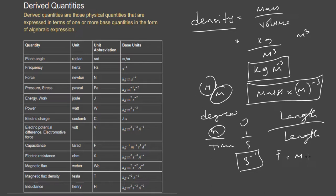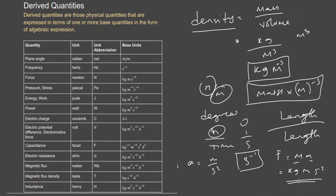Mass is a base quantity with unit kilogram. Acceleration has unit meter per second squared. So the unit of force is kilogram·meter per second squared. You can derive the base units of any derived quantity given you know its formula. We have pressure, energy, work (both in joules), power, electric charge, electric potential, and so on.